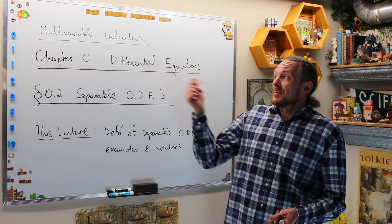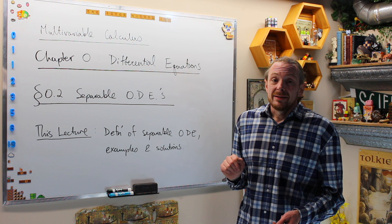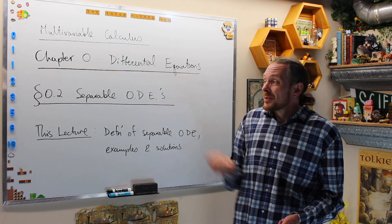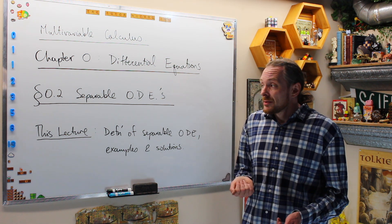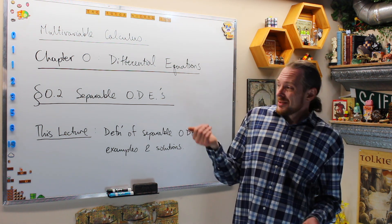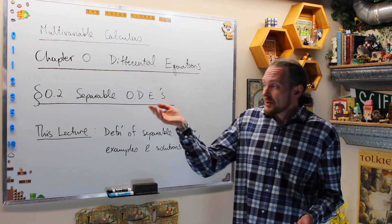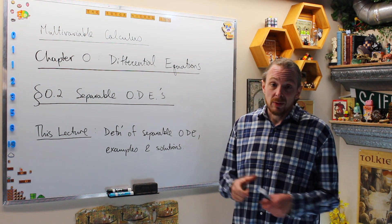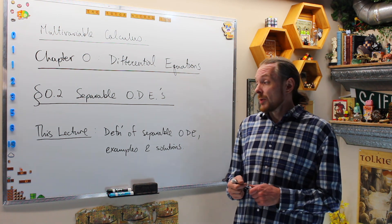What are we doing today? This is a multivariable calculus series. We're in chapter 0, differential equations. We're now going to do section 0.2, which is separable ordinary differential equations.